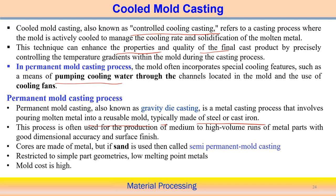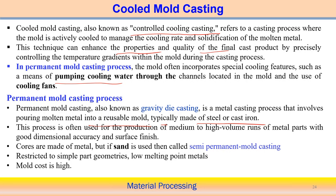Medium to high volume means a large number of components are produced. The permanent mold gives good surface finish and dimensional accuracy. Sometimes a core made of sand is used — in that case it is called semi-permanent mold casting, because the core is sand-based. If even the core is made of metallic material, it is simply called permanent mold casting or gravity die casting. The cost of the die is usually much higher in this process.